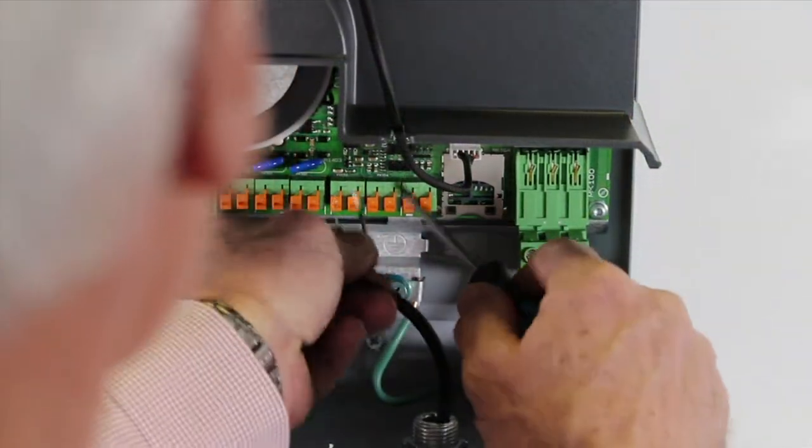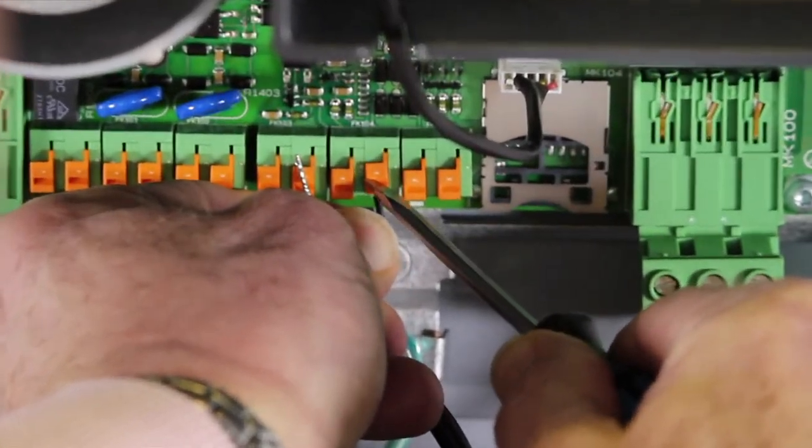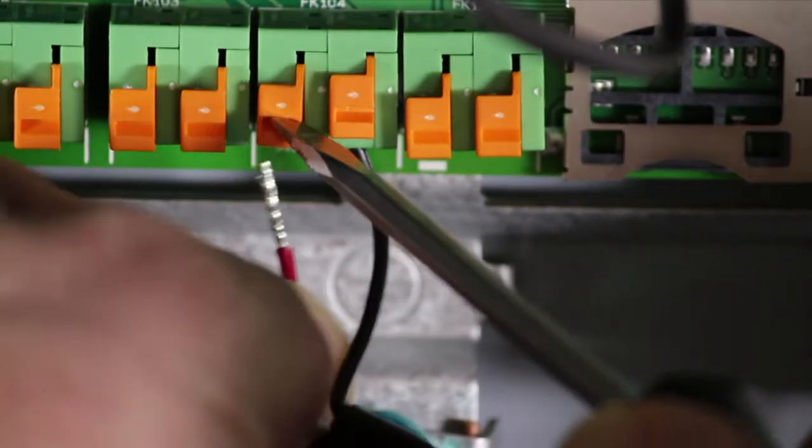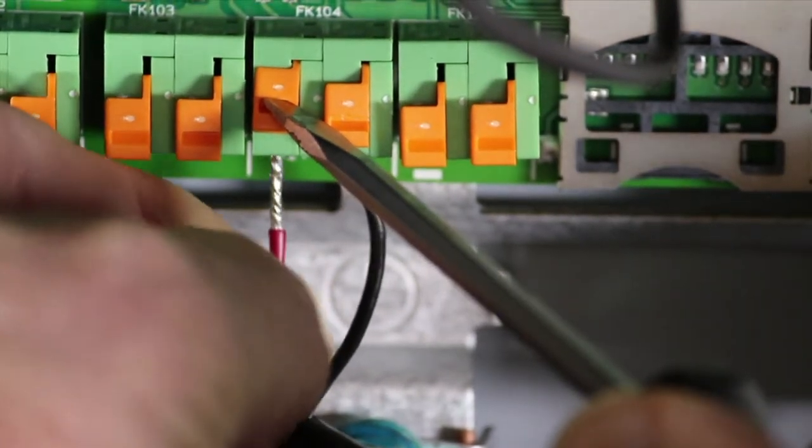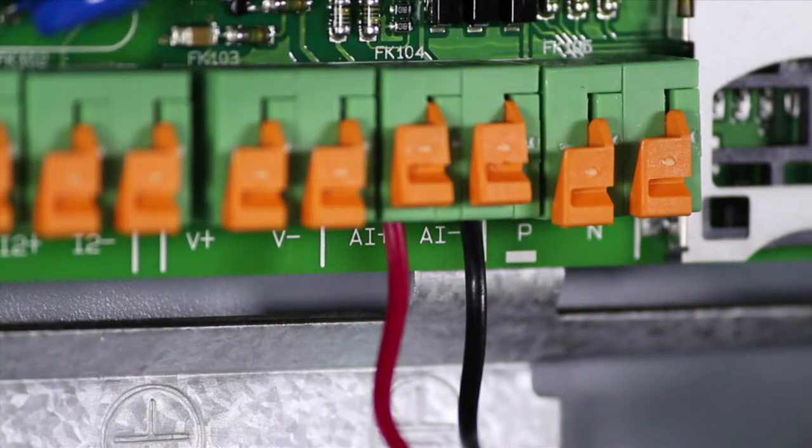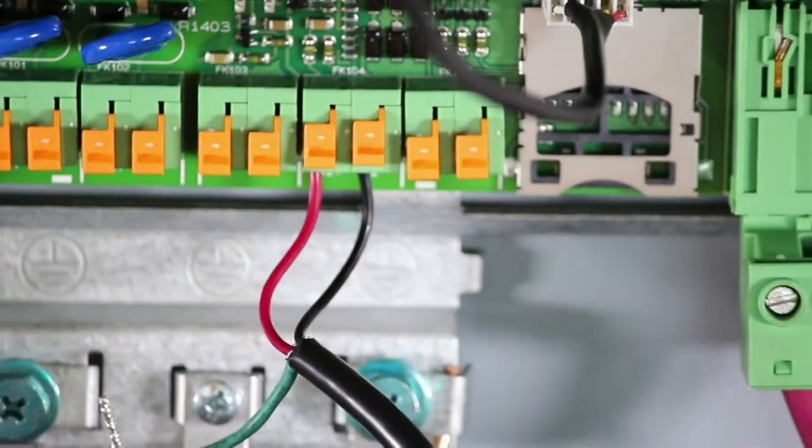The connections for the transducer are spring loaded, so all you need to do is push up on the tab with your finger or a slotted screwdriver, slip the wire into place from the bottom, and once you release the tab to the spring terminal, the wires are locked into place. We'll connect the red wire to AI plus, and the black wire to AI minus, and the green wire to the metal cable shield screw.